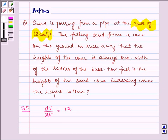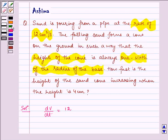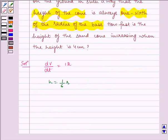Also it is given to us that falling sand forms a cone on the ground in such a way that height of the cone is always 1/6th of the radius of the base. That is, h is equal to 1/6 of r, which implies r is equal to 6h.